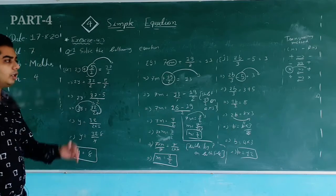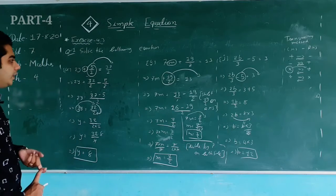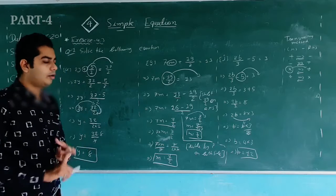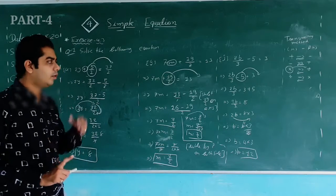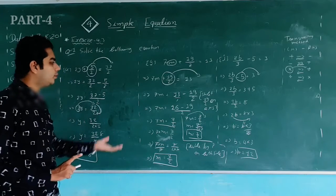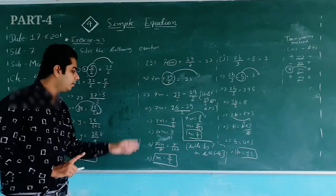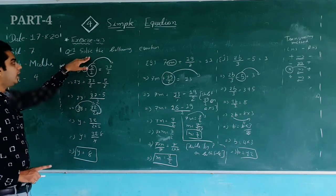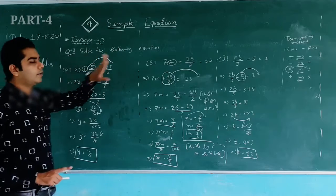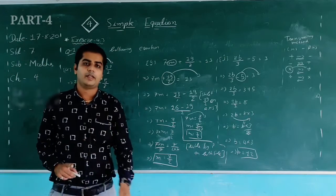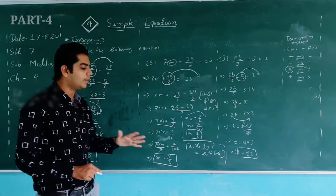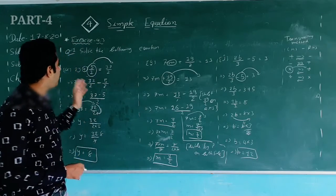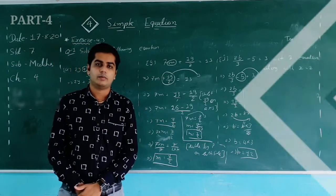The final answer is b = 12. This demonstrates both the transposing method and the separation of variable method — you can mix them or use either one exclusively. Whatever method you choose, your answer will always be the same. When the instruction just says 'solve the following equation,' you can use any method.